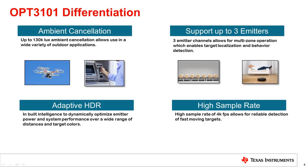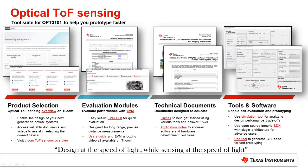OPT3101 is a special device that really sets itself apart from what is currently on the market. With very high ambient current support, the ability to support up to three emitter channels, adaptive HDR, and an extremely high sample rate of 4,000 frames per second, OPT3101 can be used in a wide range of applications. With all of these resources available to you for OPT3101, you can design at the speed of light while sensing at the speed of light. If you need any additional technical support, you can visit ti.com/support, where you will find a variety of ways to connect with our team of experts. Thanks for watching.